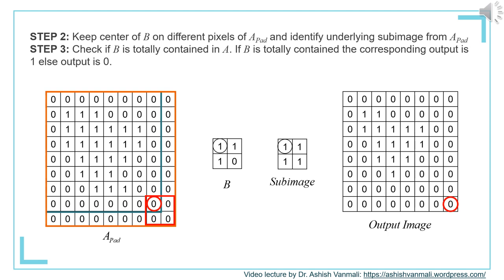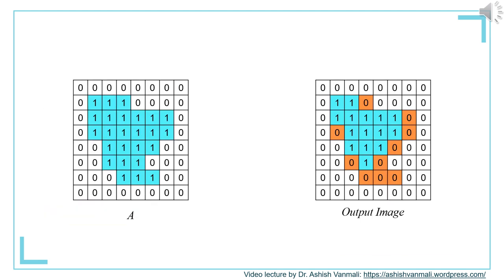We continue this process, moving structuring element B to different pixel locations, always keeping the center inside A (inside the blue boundary). We check every time whether the sub-image has all the ones corresponding to B. If totally contained, output is 1; otherwise 0. The corresponding output image is shown. Comparing the original image A and the erosion output, the object has shrunk.